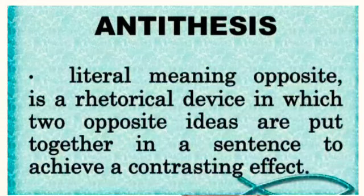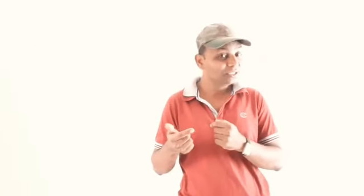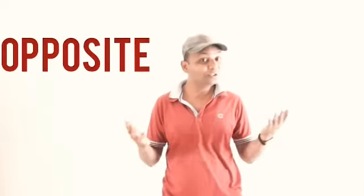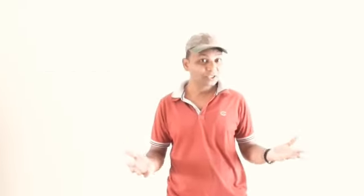The ninth figure of speech is antithesis. Anti means opposite — anti-corruption, anti-pollution — anti means opposite. So in antithesis figure of speech, two opposite words or opposite ideas are used for strong effect.